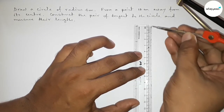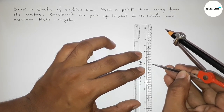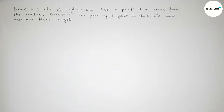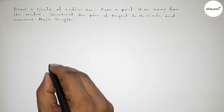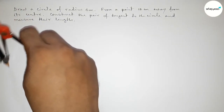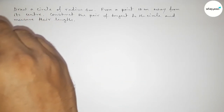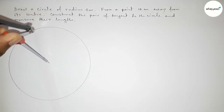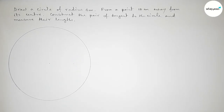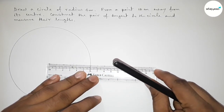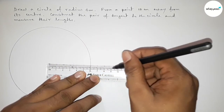First of all, we have to draw a circle of radius 6 centimeters. Taking a 6 centimeter length using a scale — this is 6 centimeters. Now taking a point as the center of the circle, putting the compass on the point and drawing an arc, drawing a circle of radius 6 centimeters.